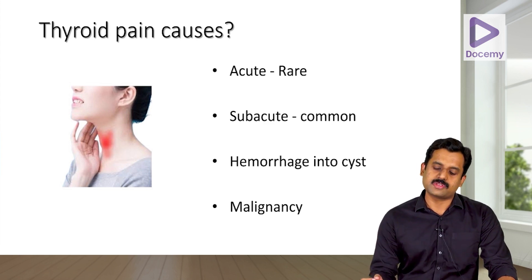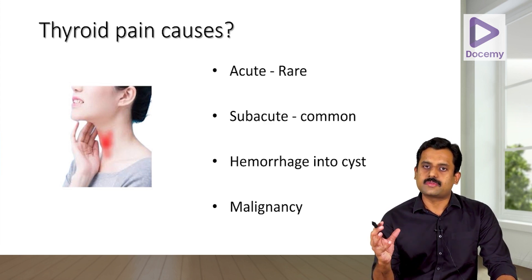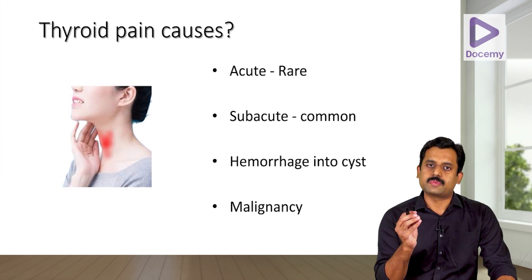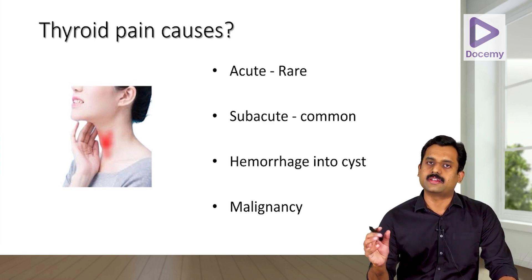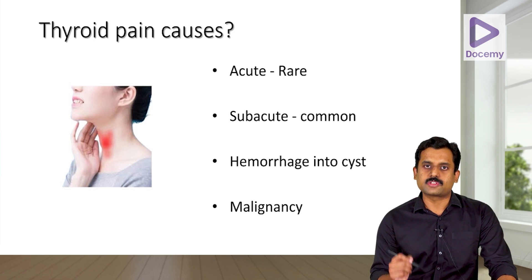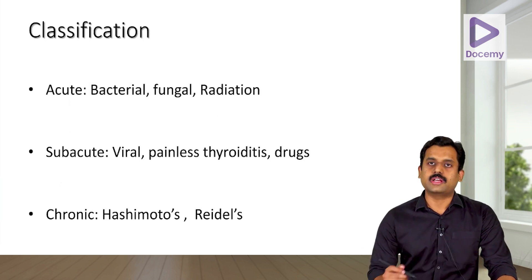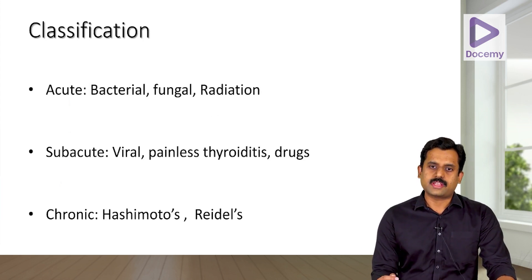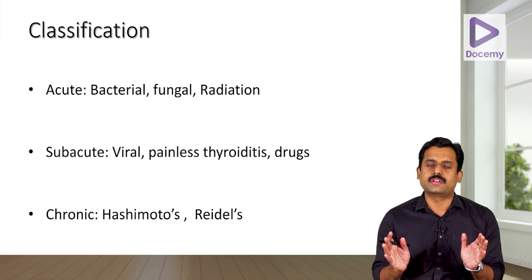In a thyroid patient developing sudden onset of pain, always think about possible malignant transformation. Keeping these possibilities in mind, let's go to the classification of thyroiditis. Thyroiditis can be classified into acute thyroiditis, subacute thyroiditis, and chronic thyroiditis.